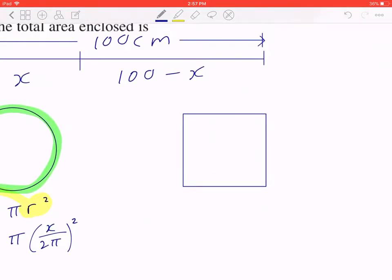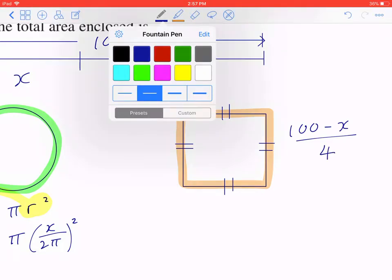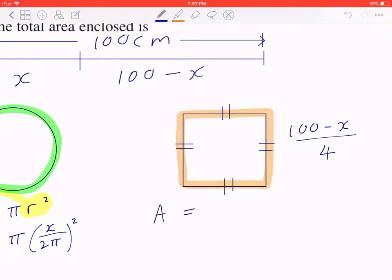Likewise, if you think about the other part of the wire, it's going to be bent into a square. By definition, if it's going to be a square, all four sides are equal. So instead of saying 100 minus x, each side is going to be 100 minus x divided by 4. This means the area equals 100 minus x divided by 4 quantity squared.